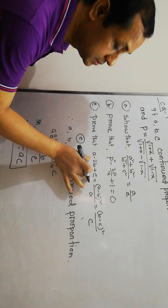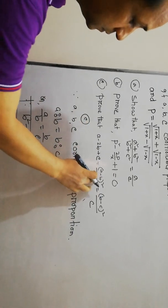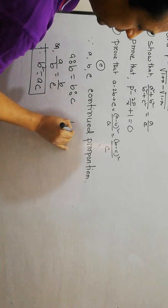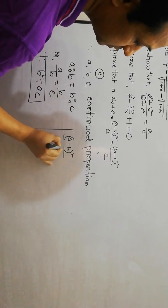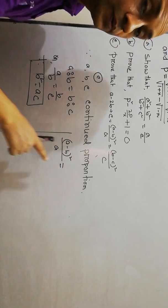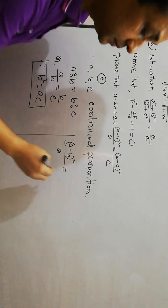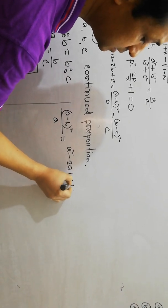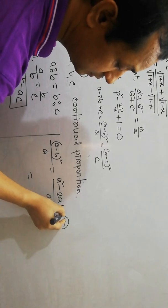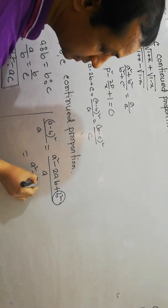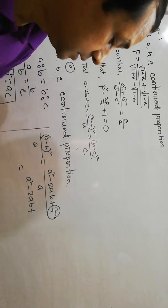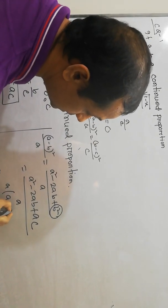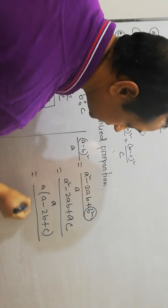We have first, second, and third expressions to evaluate. The second expression is (A − B)² divided by A. Using the formula (A − B)² = A² − 2AB + B², and putting the value of B² equals AC, we get A² − 2AB + AC divided by A. Taking common A from numerator gives A(A − 2B + C) divided by A, which simplifies to A − 2B + C.